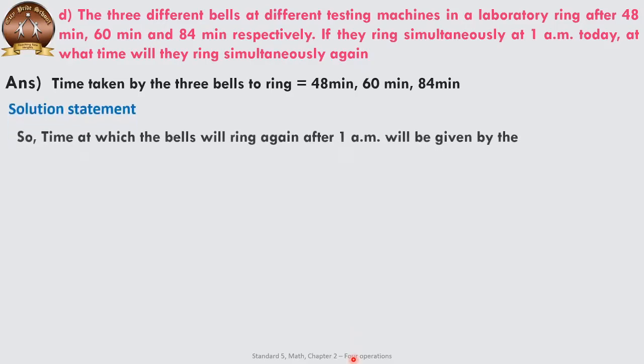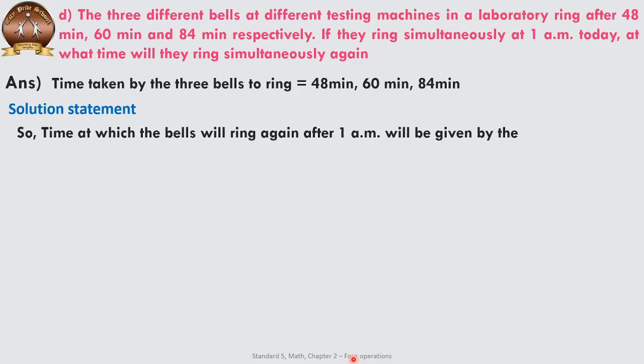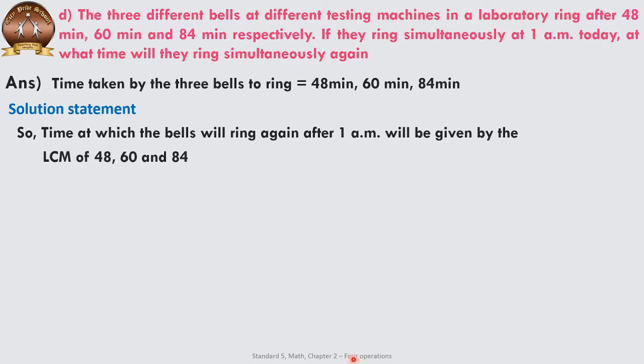Looking at the solution: the time at which the bells will again ring after 1 AM will be given by the LCM of 48, 60, and 84. Why LCM? Because the bells cannot ring together before 48, 60, and 84 minutes have passed — they will take more time than each individual interval. When we need a number larger than the given values, we use the LCM.